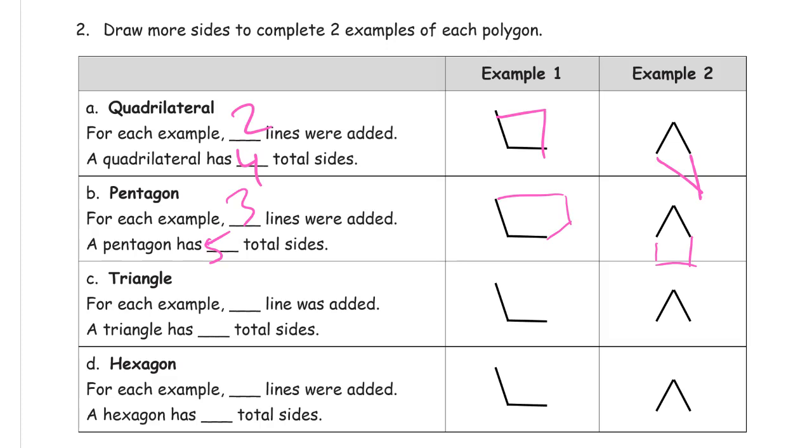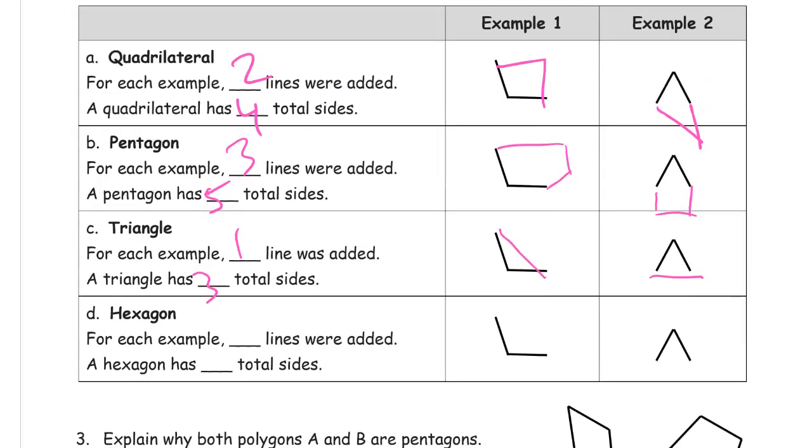Triangles have to have three total sides. So if I have two already, I need one more to make it a triangle. There. And there. Some of these have, there's a lot of different ways that you can draw more lines for quadrilaterals. They don't have to look exactly like mine. For the pentagons, they don't have to look exactly like mine. But for the triangles, there's only one way to do that. You need one more line, and there's only one place you can draw it.